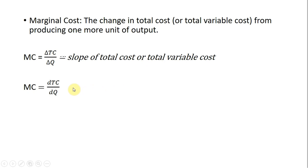In calculus, slope is a derivative. So we just take the derivative of total cost, or we could take the derivative of total variable cost with respect to the quantity of output, to find what marginal cost equals. Let's do a number of examples. I think I have six of them here.